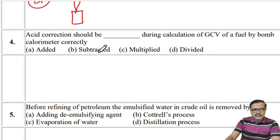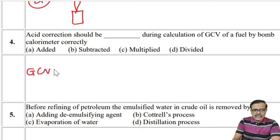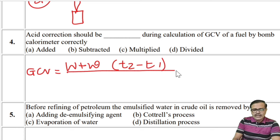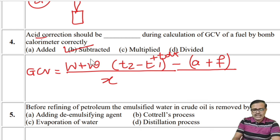Regarding the bomb calorimeter, we know that acid correction, fuel wire correction, and cooling correction are applied for an accurate gross calorific value formula. The formula is: GCV = (W + w)(T2 − T1) / x. After corrections, acid correction and fuel wire correction are to be subtracted, while cooling correction — written as T·dt — is to be added. Since acid correction is to be subtracted, the answer is the second option.